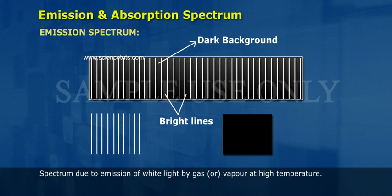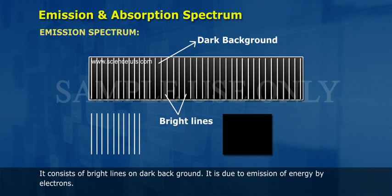Emission Spectrum. Spectrum due to emission of white light by gas or vapor at high temperature. It consists of bright lines on dark background. It is due to emission of energy by electrons.